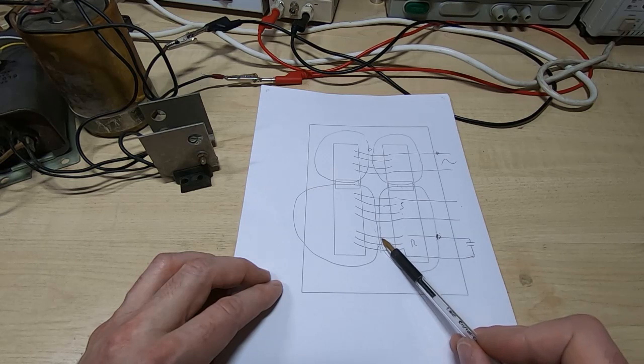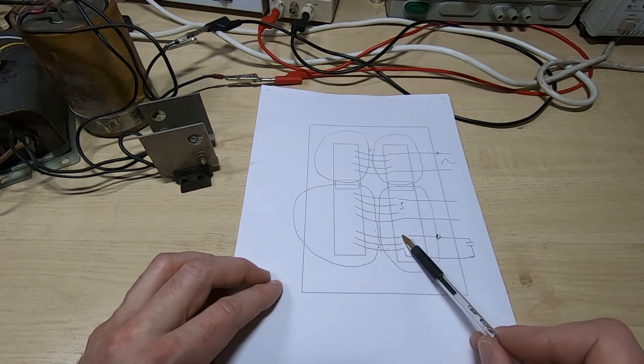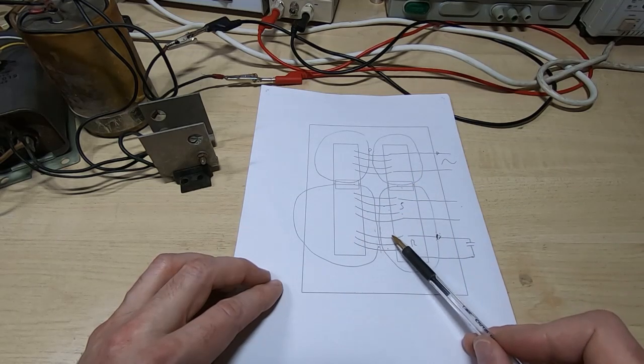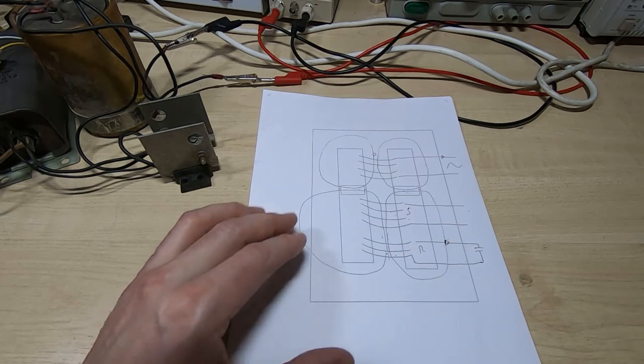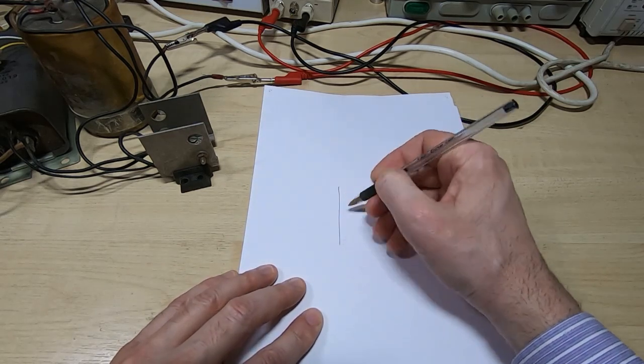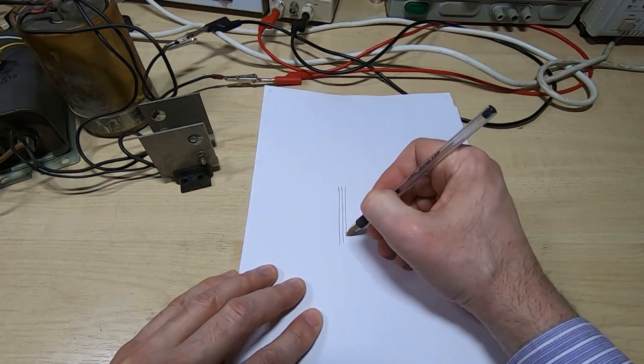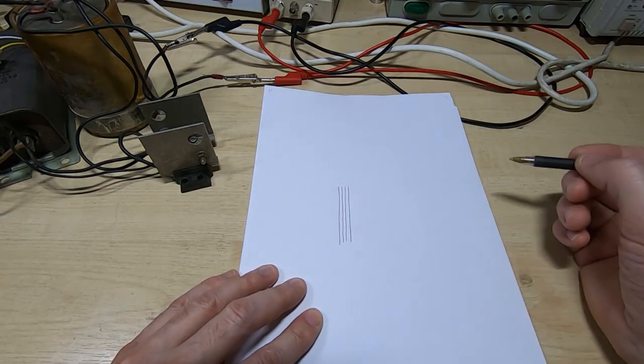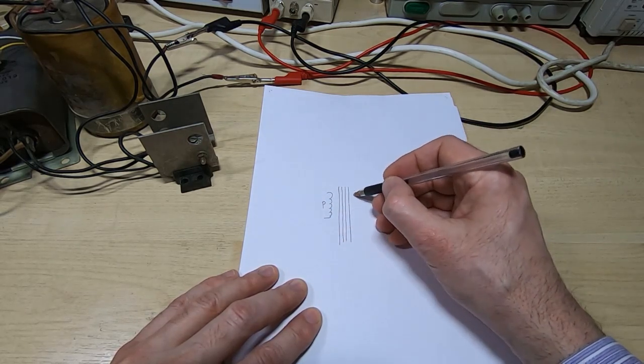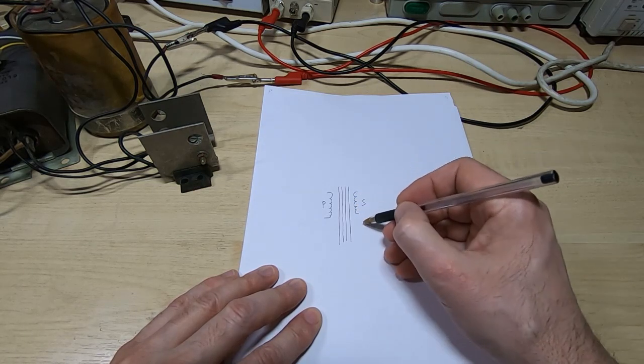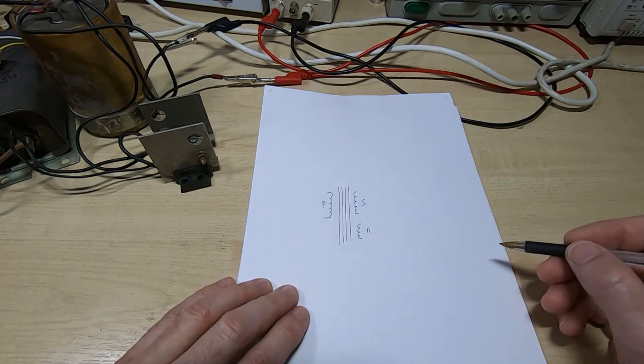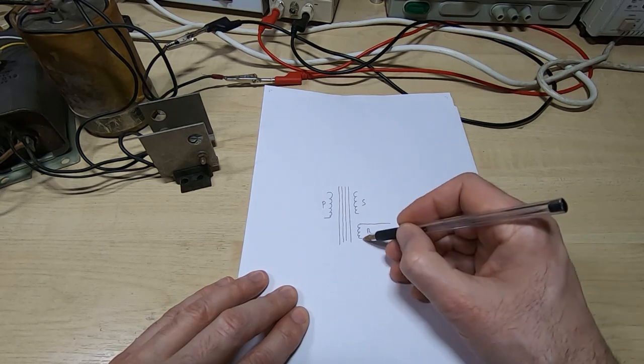And the way this is achieved is through the use of a third winding, which is the resonant winding. So if we take this diagram and I redraw it as a schematic representation rather than a physical representation, what we end up with is a transformer. So we have the core. I'll ignore the shunts for now. They're not important for this particular part of the discussion. We have the primary winding on one side, we have the secondary, and then we have the resonant winding. And as I said in the previous video, the only thing connected to the resonant winding is a capacitor.